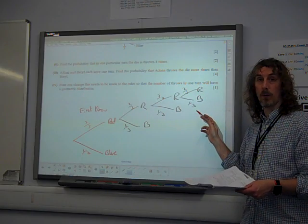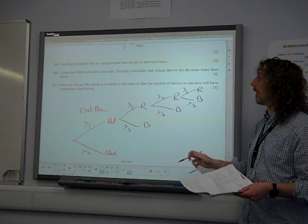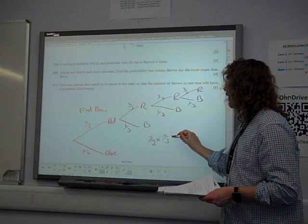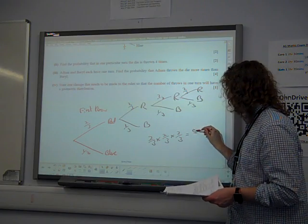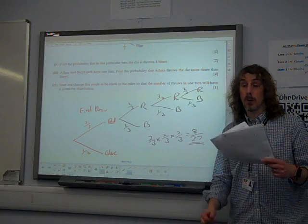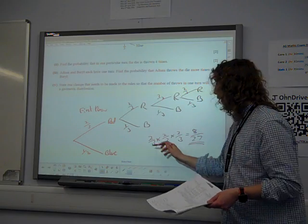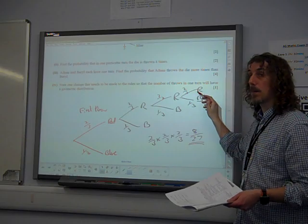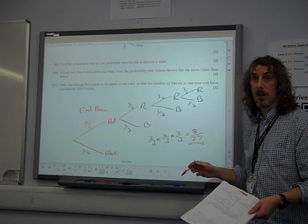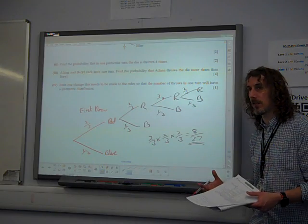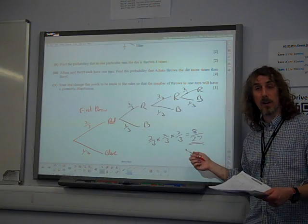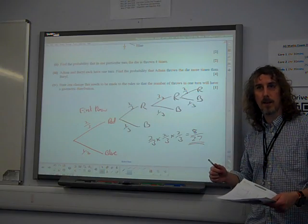Regardless of whether it's red or blue, a fourth throw has happened. So the probability that the die is thrown four times is two-thirds times two-thirds times two-thirds, and that is it. So eight over twenty-seven. You do, of course, get the mark if you do red, red, red, red, plus red, red, red, blue. It's over-complicating it, because what you're doing there is additional calculations that you don't need, but it gives you the same answer. It still gets the mark, but that doesn't make it better.